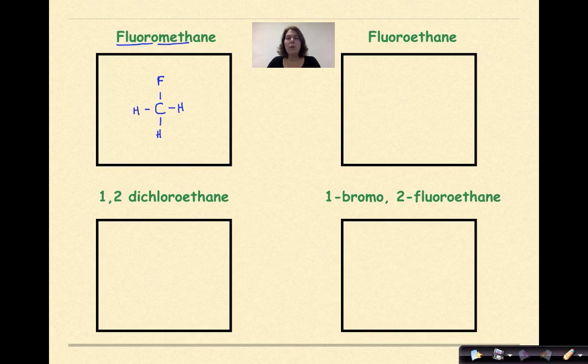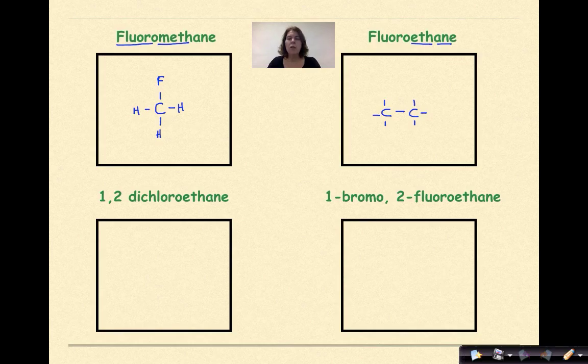Let's look at our next one. Fluoroethane. I'm going to start with the E. So 1, 2, A-N-E ending, which means a single bond between the 2 carbons. Every carbon has 4 bonds, so I'm going to put that in. And then again, we have a fluorine. Again, it doesn't matter in this particular case where we put that fluorine. So I'm going to put it down here. There's my fluorine. And then we have hydrogens going around the rest of the molecule.